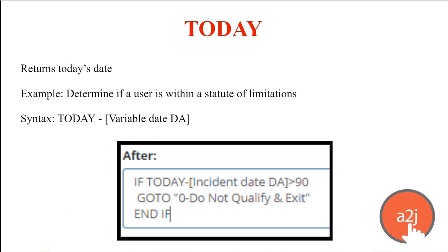The today function returns today's date. This is used to determine if a user stays within a statute of limitations — today minus a variable date will tell you, for example, if it's been more than 90 days since an incident happened. Today is also used to set limits on a calendar as a minimum or maximum, restricting the user's input. It will either prevent them from entering dates in the future if the maximum is today, or prevent them from answering with a date in the past if the minimum is today.